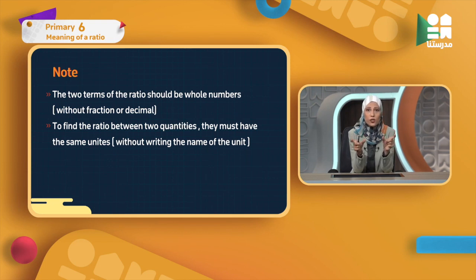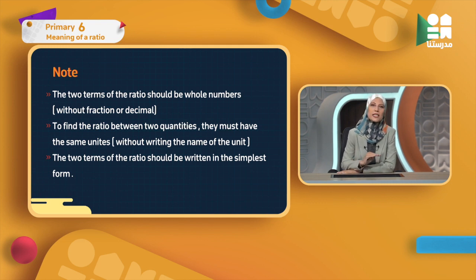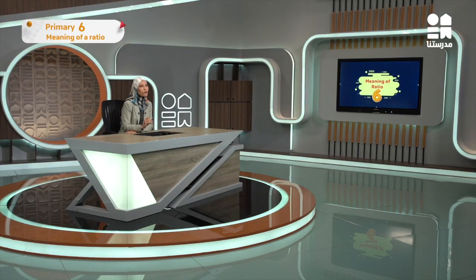After converting the units so both terms are the same unit, I will not write the unit name. After converting so my two terms have the same unit, I do not write it. The last note says: the two terms of the ratio should be written in the simplest form — this is a very important step. The ratio must reach the simplest form, meaning I cannot simplify it any further. Simplify means divided by.